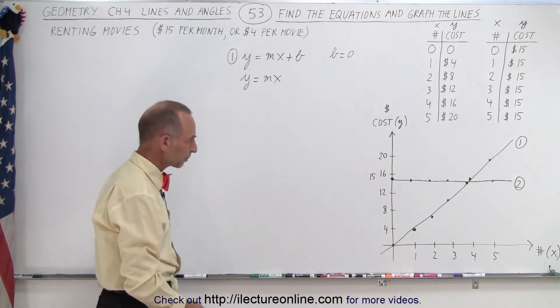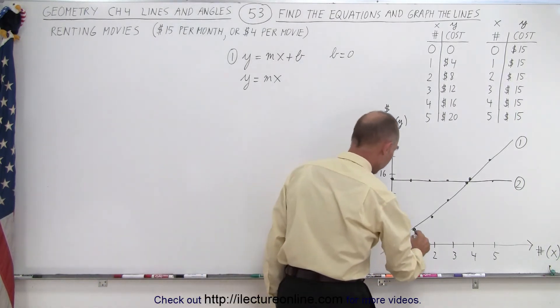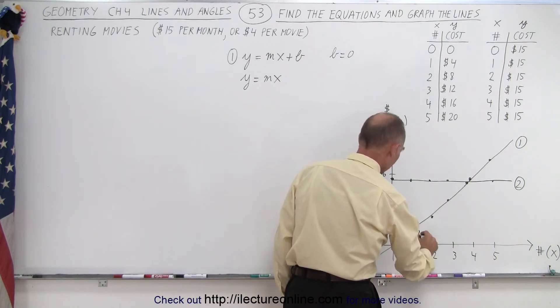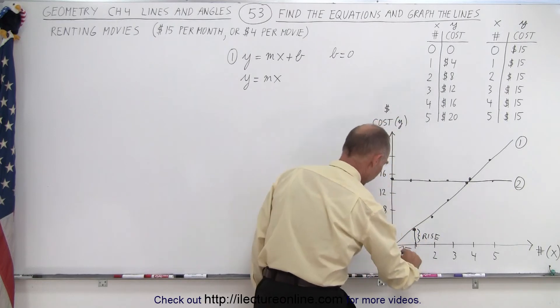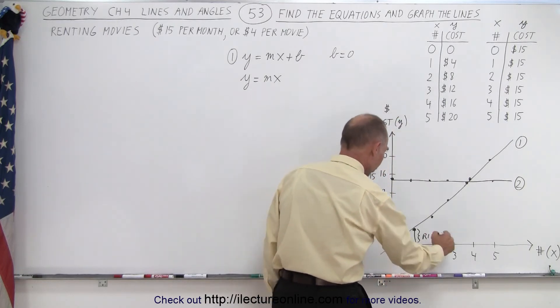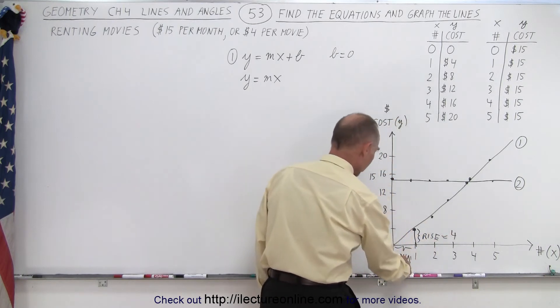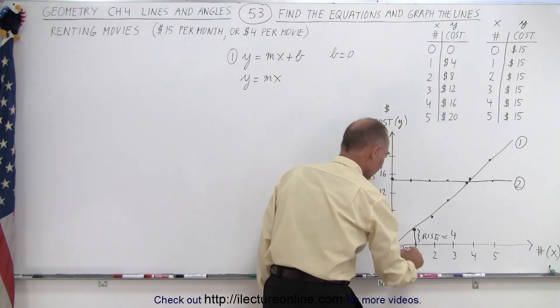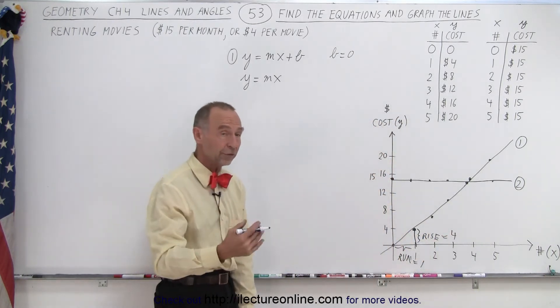Now for the slope. Notice the slope can be represented by the rise over the run. So this is the rise. This is the run. And notice we rise from zero to four, which is equal to four. And the run, that's equal to one. So we can see that the rise over the run is four to one.